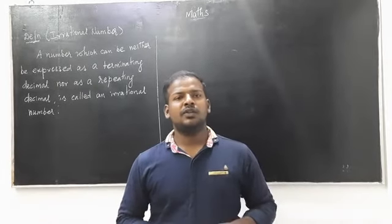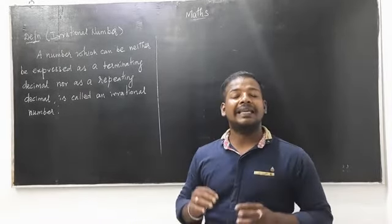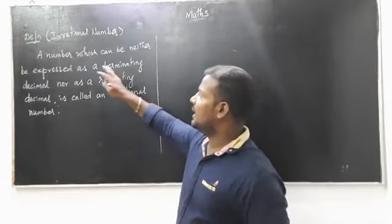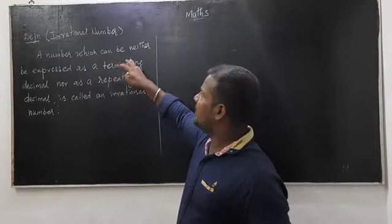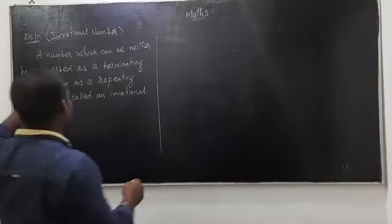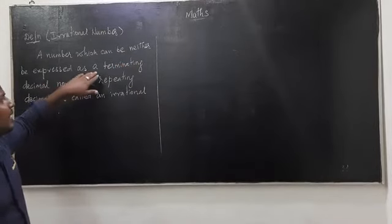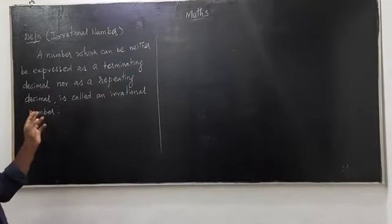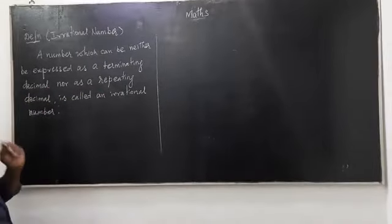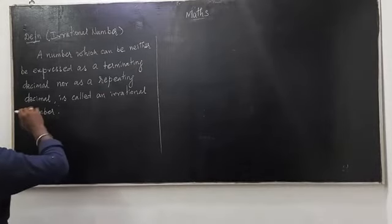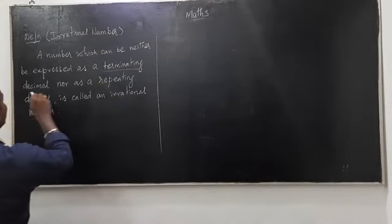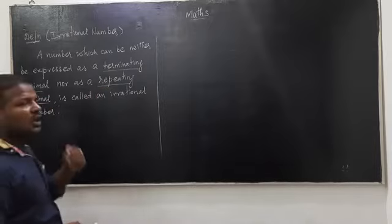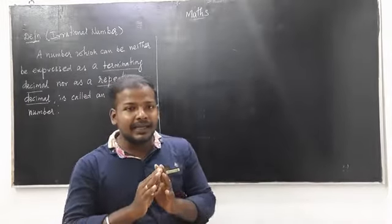Hello everyone. Today we are going to learn about the irrational numbers. The definition of an irrational number is a number which can be neither expressed as a terminating decimal nor as a repeating decimal. So two things are important: it should not be a terminating decimal and not a repeating decimal.